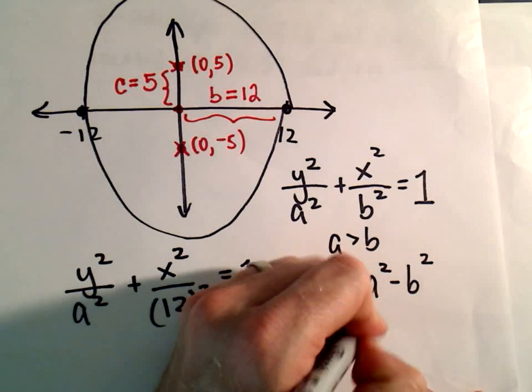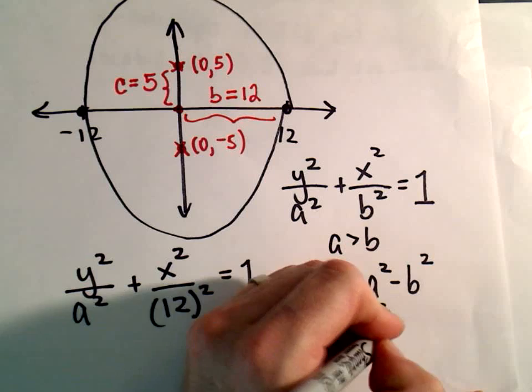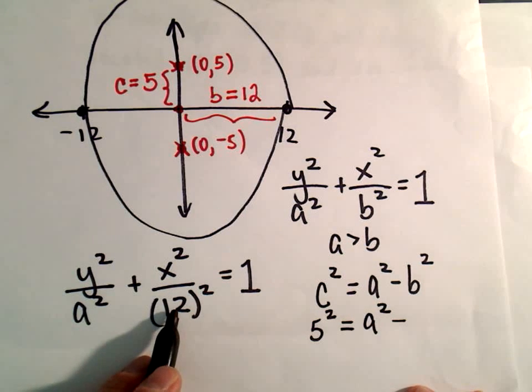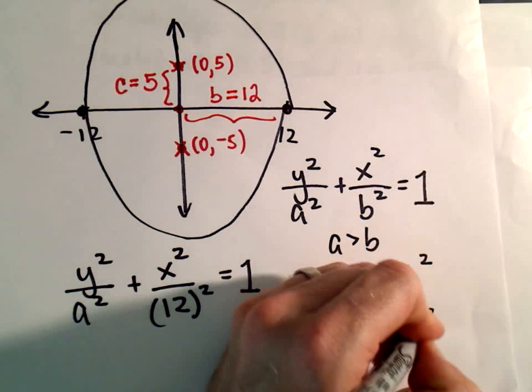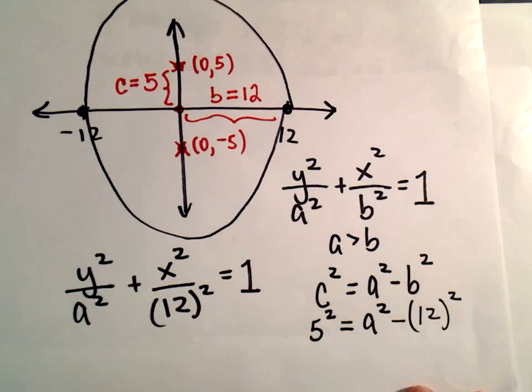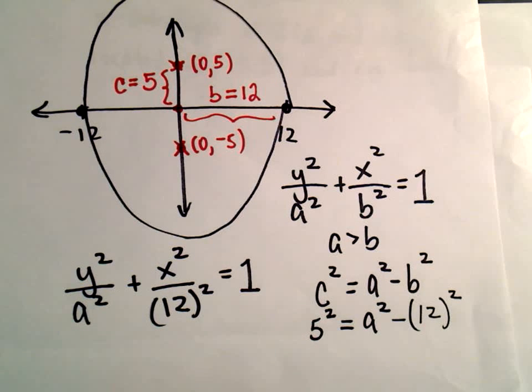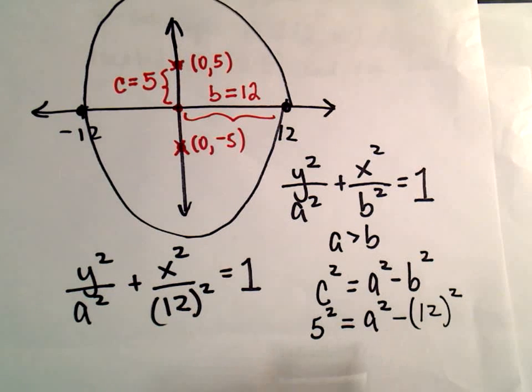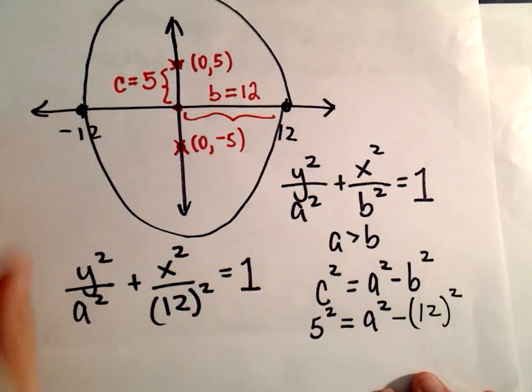a² we don't know, that's fine, we'll figure it out. b² so b is 12, so we'll have to square that. And then what we're going to do is simply solve for a². I'm not even going to solve for a, I'm just going to plug in what a² equals. So let's see, 5²...